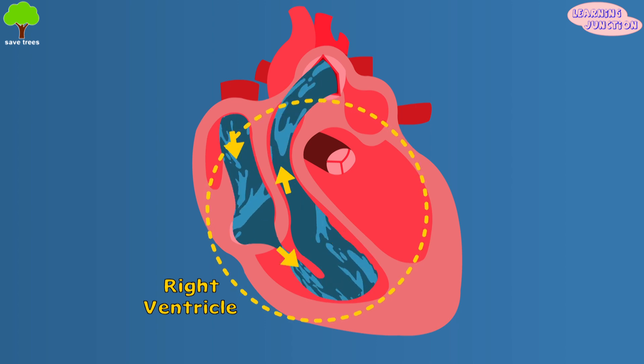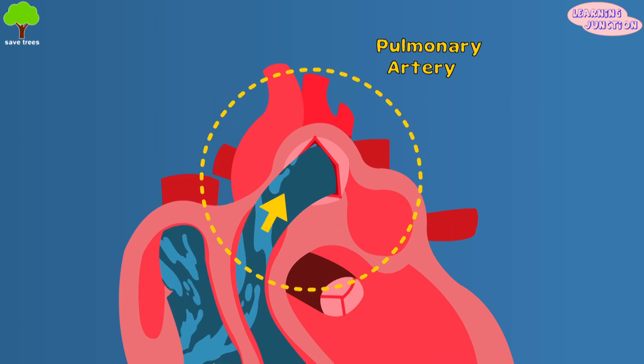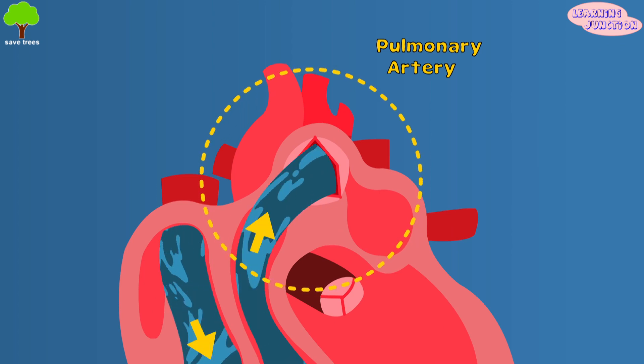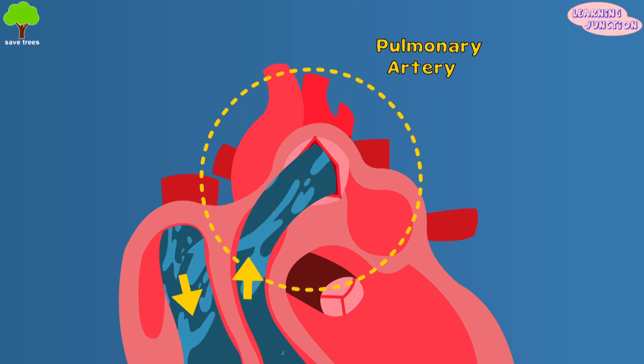The right ventricle then contracts and pushes the blood into the pulmonary artery, which carries blood from the right ventricle of the heart to the lungs for oxygenation.